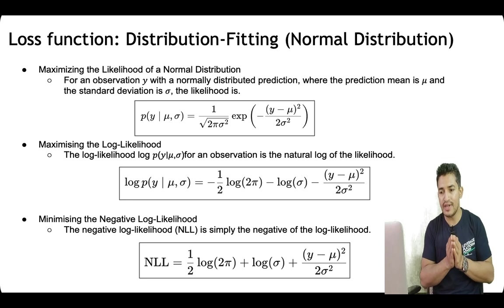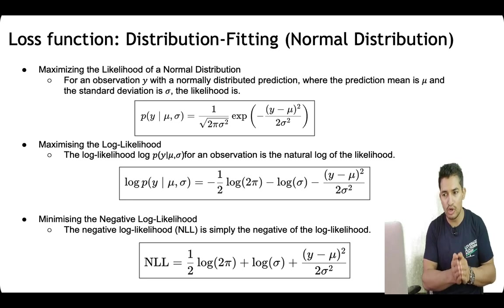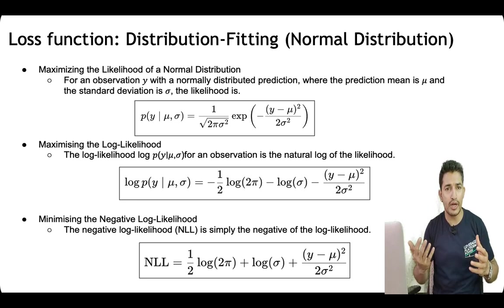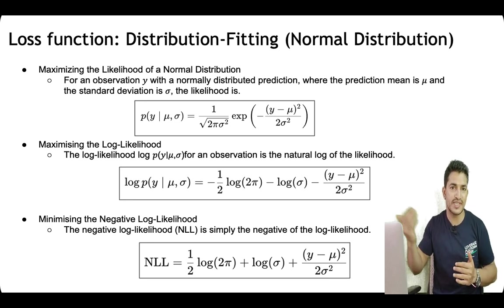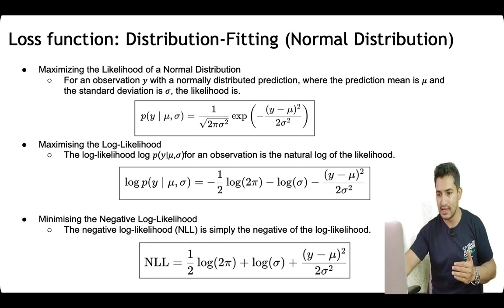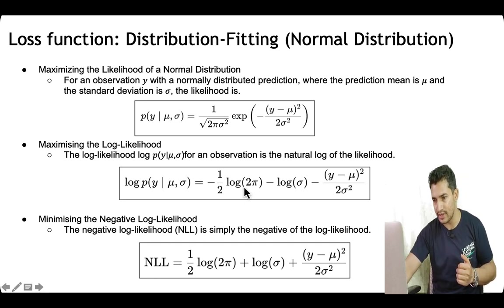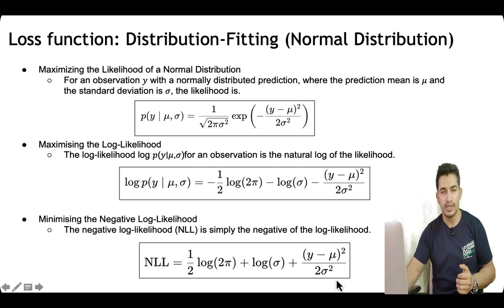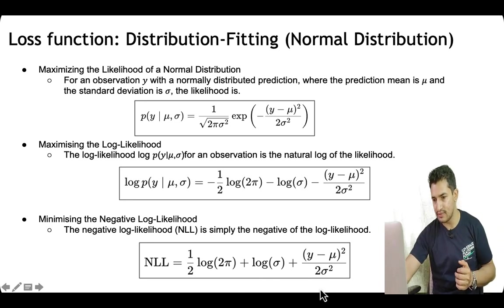We minimize the negative log likelihood because when we train a model, we minimize the loss — we want something to minimize, not maximize. So whatever we want to maximize, we take the negative of it and minimize that. When you take the negative, all the negatives cancel, and this is the final loss function formula that we will try to minimize during training.